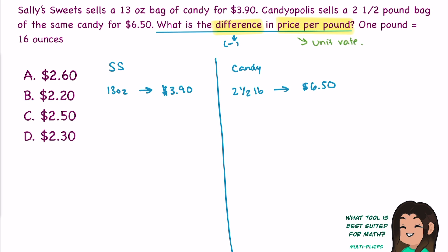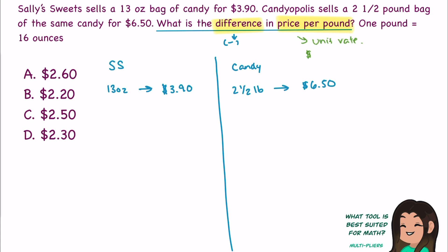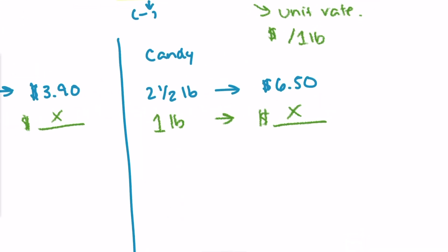It's giving me a hint to the setup of my proportion. If 2.5 pounds is costing me $6.50, I want to know what will the price be for 1 pound of the object? If 13 ounces is costing me $3.90, what is 1 pound of this object going to cost me? Once we figure that out, we'll have the difference to our prices per pound. We can subtract them and take the difference.